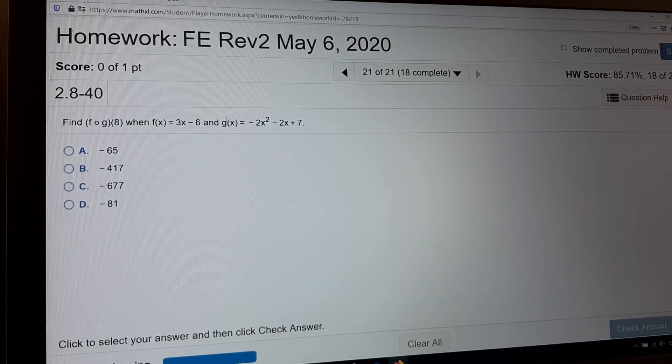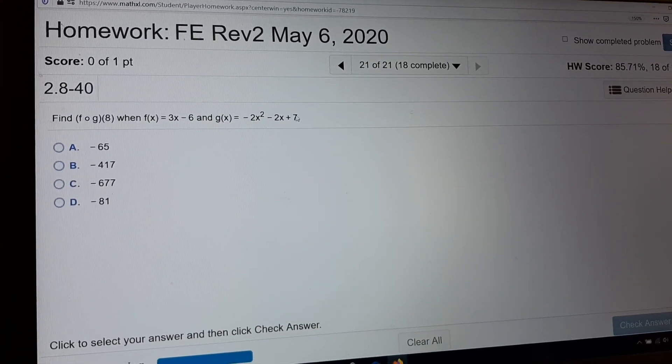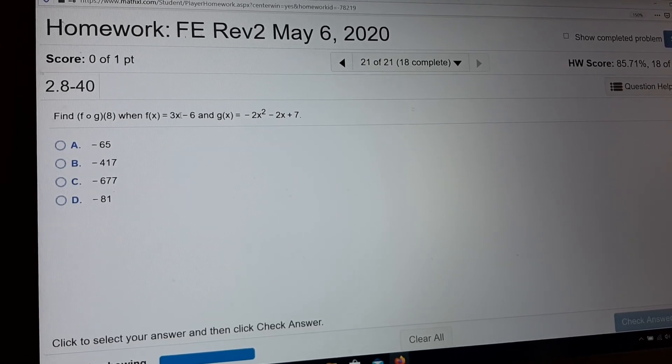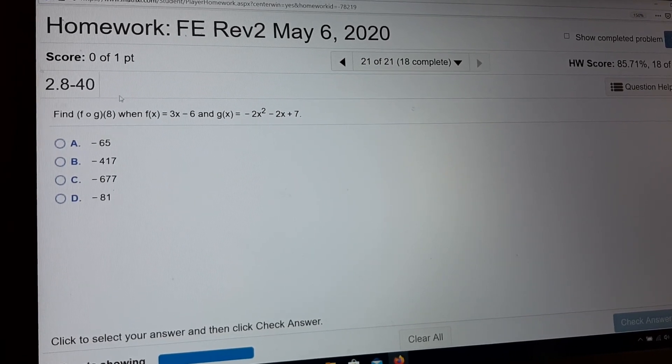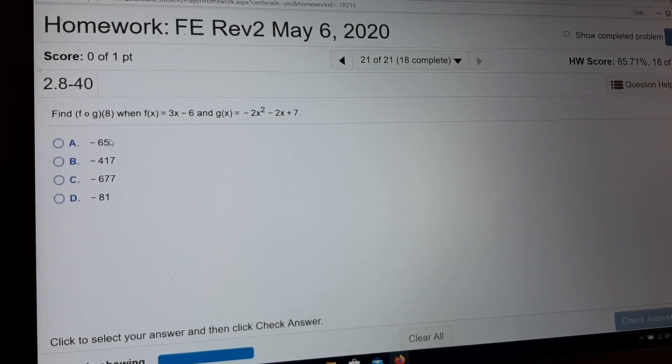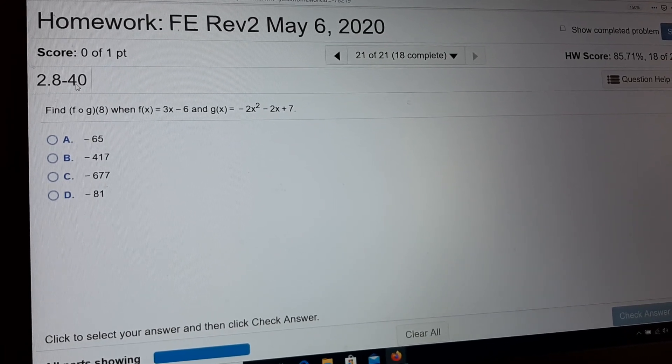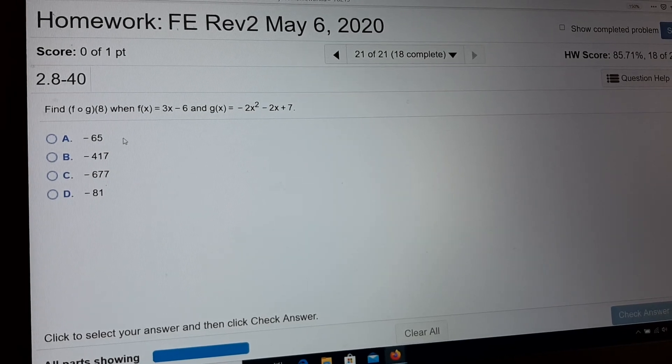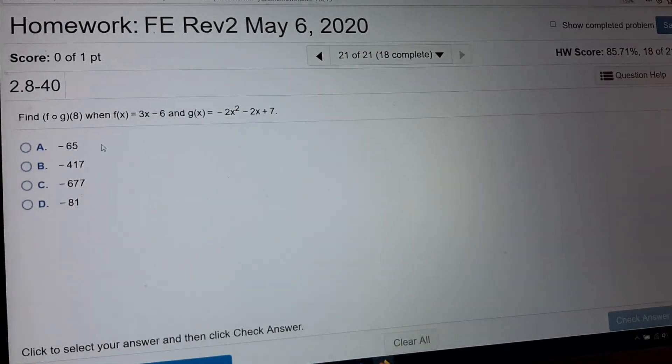f of g of a, okay. Same problem. Just g of x is bigger here. Substitute in for the x. Simplify. Substitute in 8. And now it's multiple choice. So double check this one. 2.8 dash 40. So you got this correct. Thanks guys. Great job today.